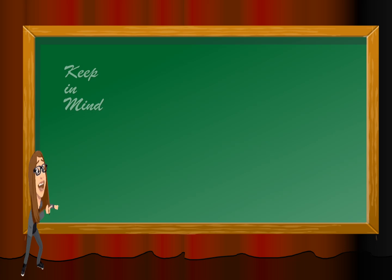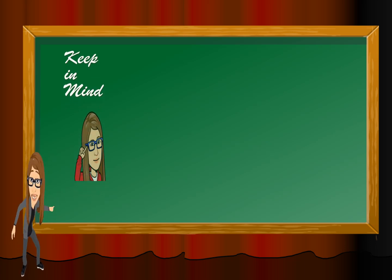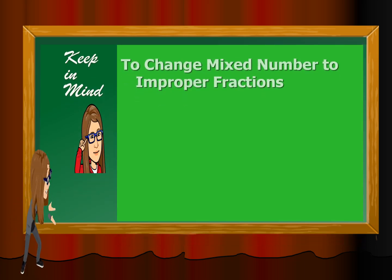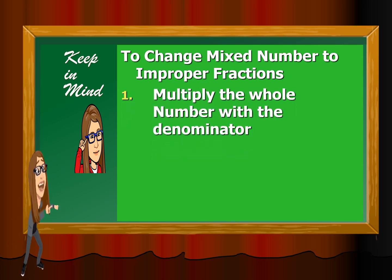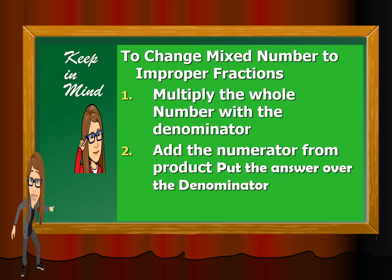So now, class, I want you to keep in mind. To change mixed number to improper fraction, multiply the whole number with the denominator. Then add the numerator from the product. Then put the answer over the denominator.